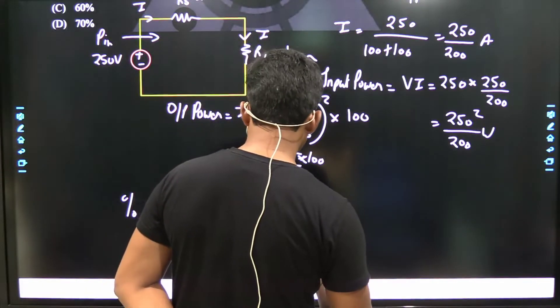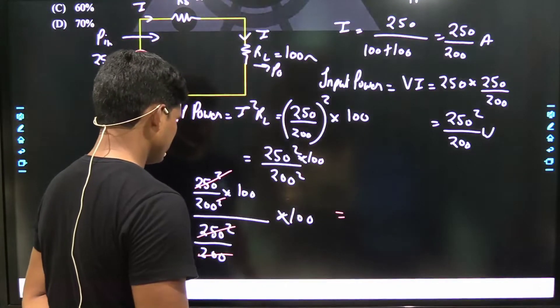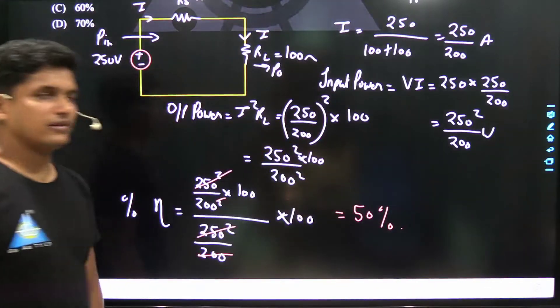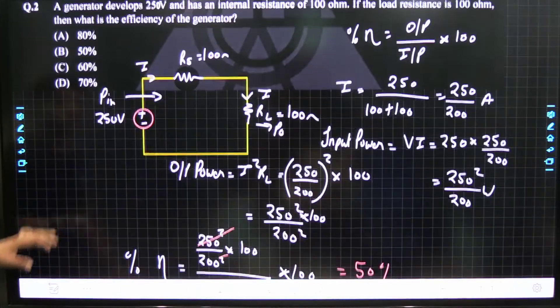That is 100 upon 200, that is equal to 0.5, that is equal to 50 percent. So 50 percent is the correct answer.